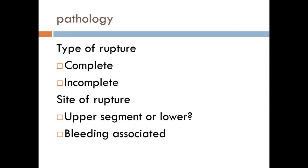Regarding bleeding associated with rupture, this may be severe bleeding if the uterine artery is injured during labor, but may be mild, especially during rupture of a previous scar site.